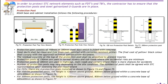Number four: protection posts of 150 mm are used in normal streets and sub-roads where accidents are less likely. Number five: protection posts of 300 mm are used in highways, main roads and corners where there is more probability for accidents. Number six: the number of protection posts may vary depending on the site condition; the number of posts shall be agreed with the STC representative after assessing the site requirements. Number seven: for FDTs, there are four protection posts installed. For 150 mm protection posts, the height is 1.2 meters above ground and 800 mm below ground, with a concrete base of 600 × 600 mm.